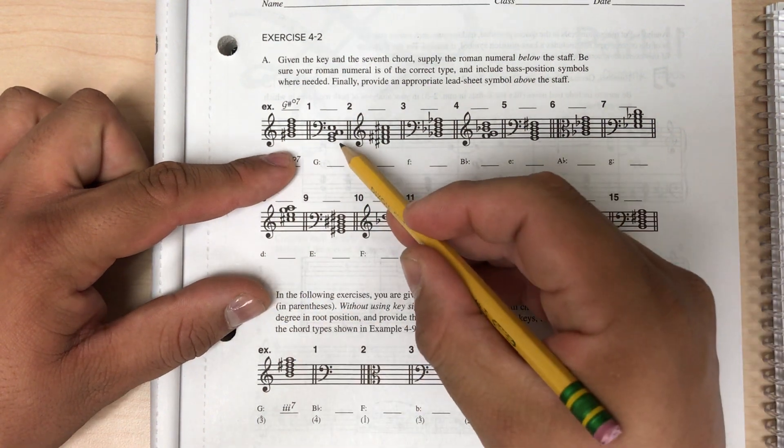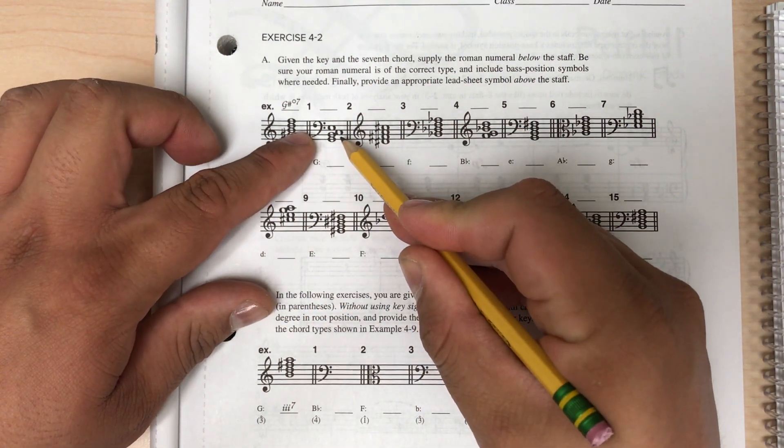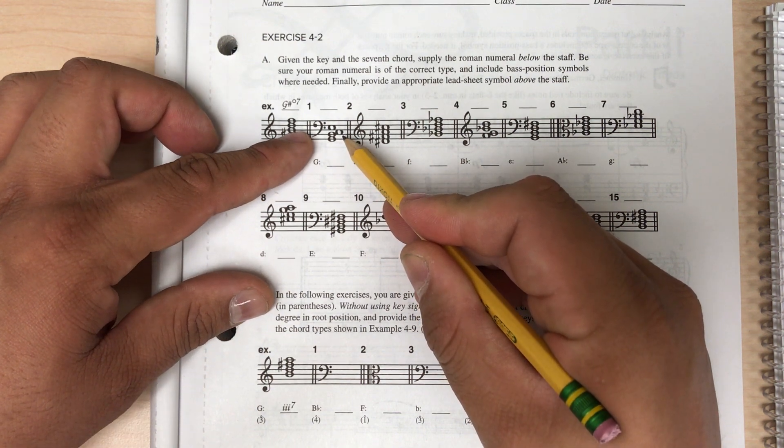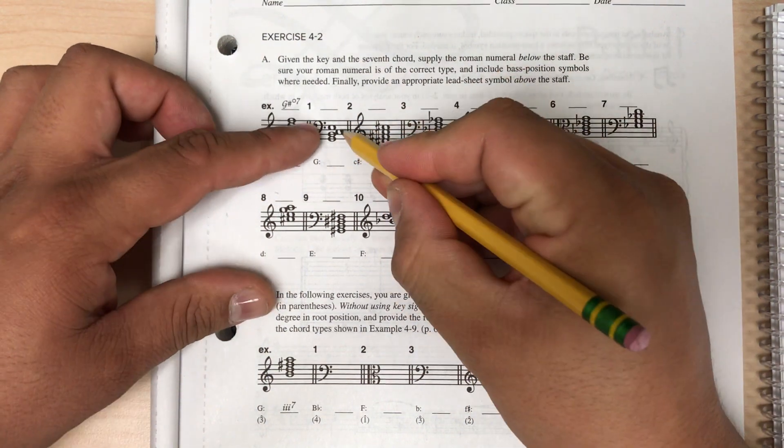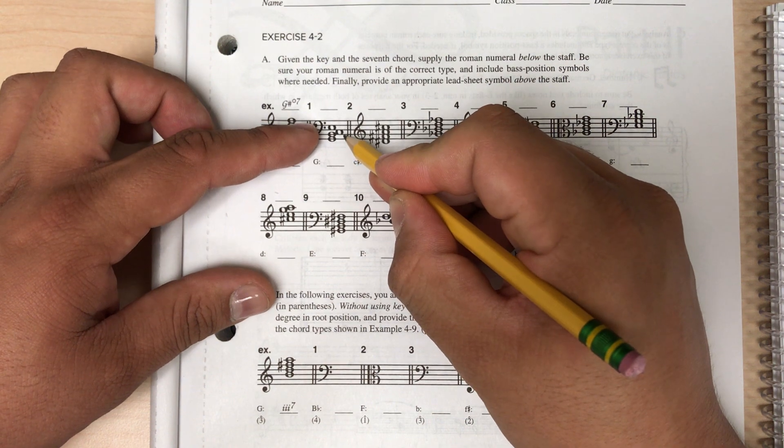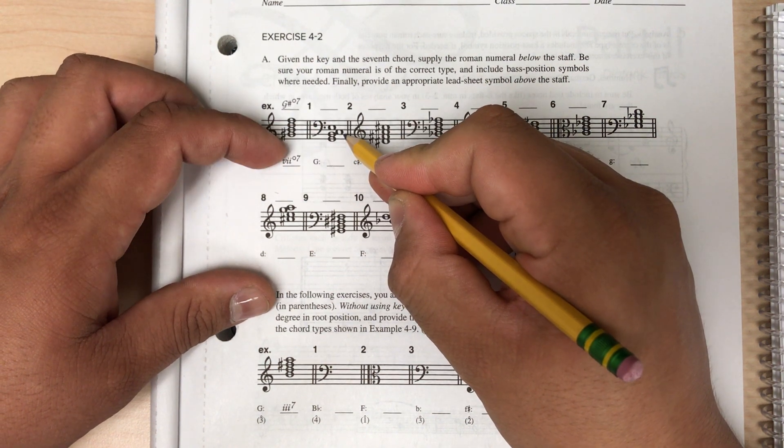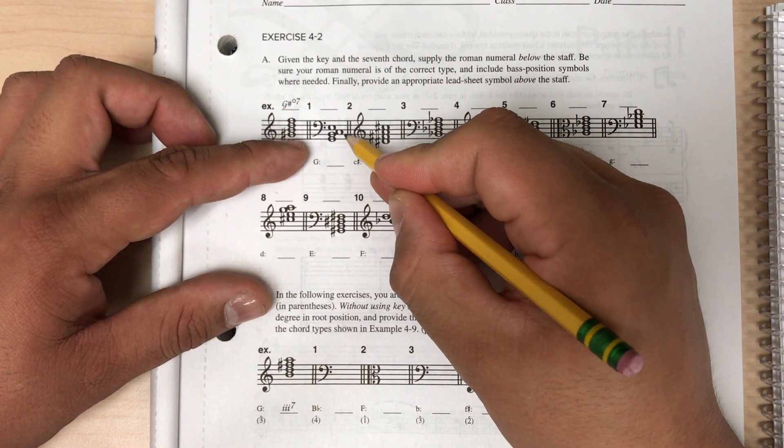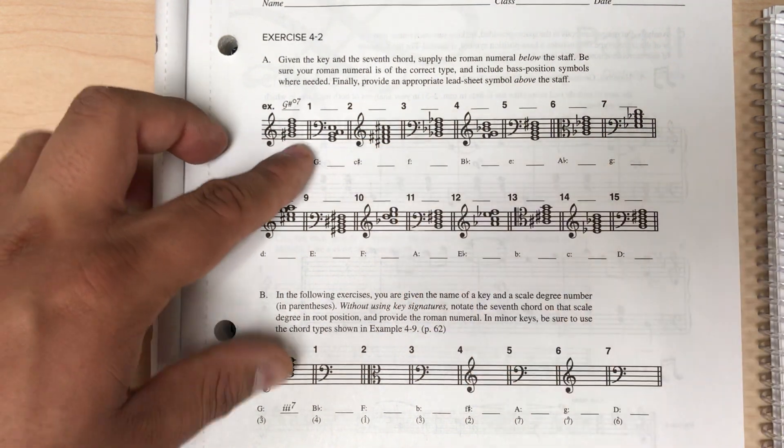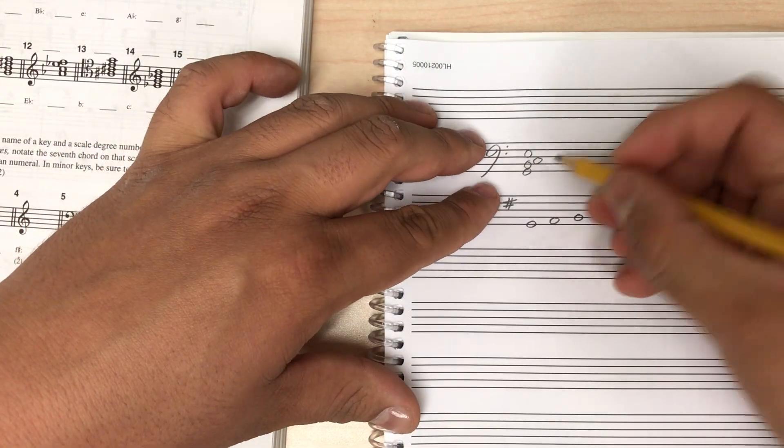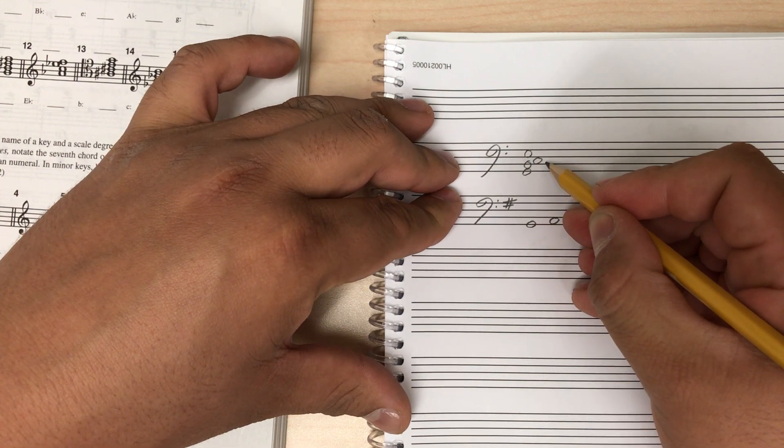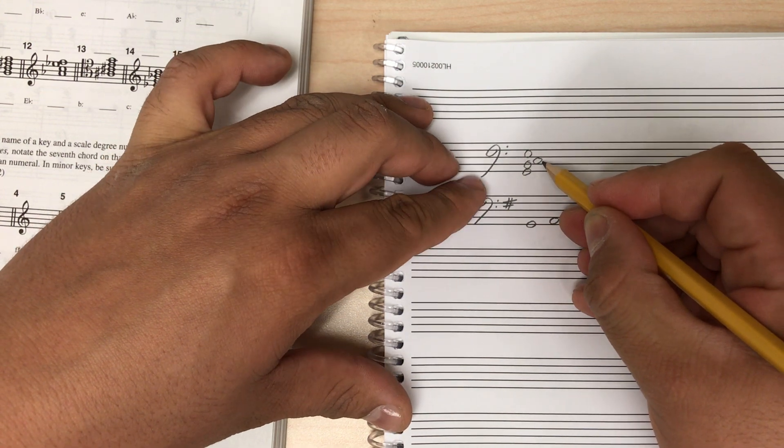So first step, we're going to find the lead sheet symbol for this guy, then we're going to assign it a Roman numeral. Before we even do that though, we have to figure out what chord this is, and to do that we need to stack it in thirds. So we can see this is not already stacked in thirds, it's not already a snowman, so I need to re-spell this so I can figure out what the root is. So I need to put all of these notes so that they land on either spaces or all land on lines.